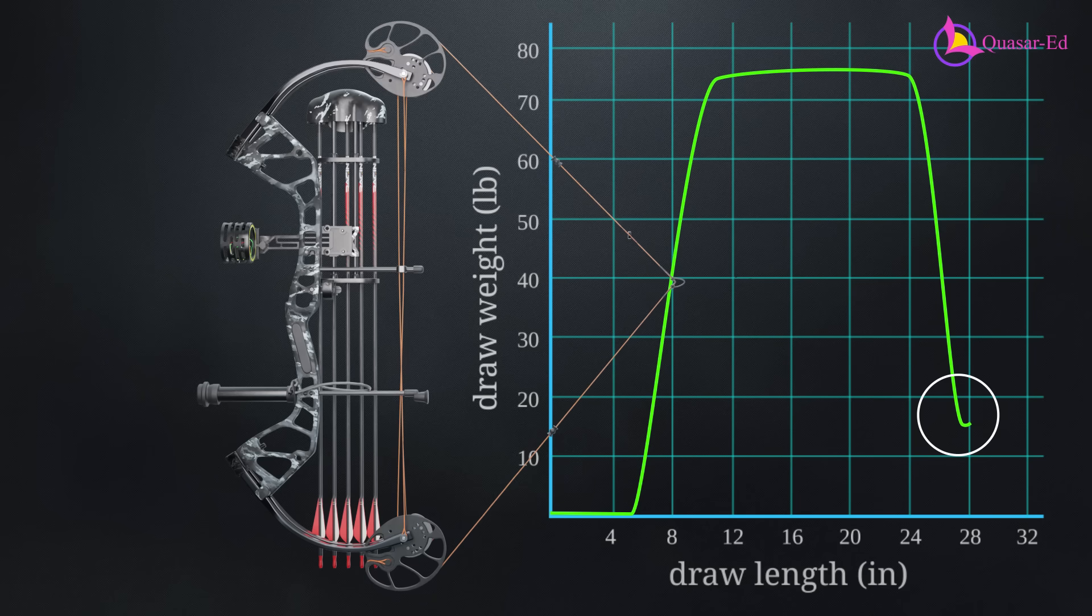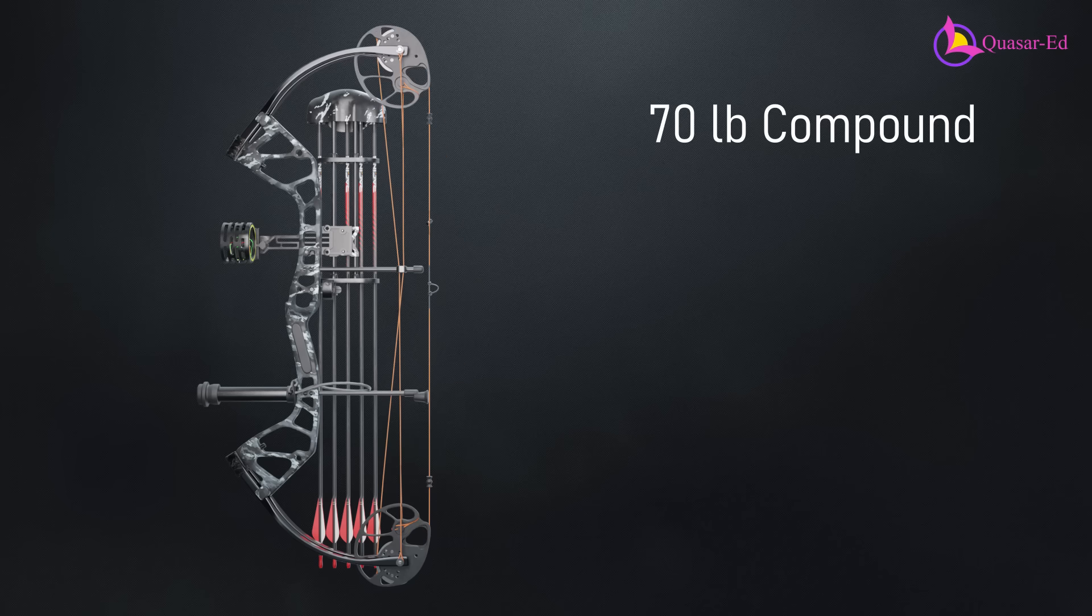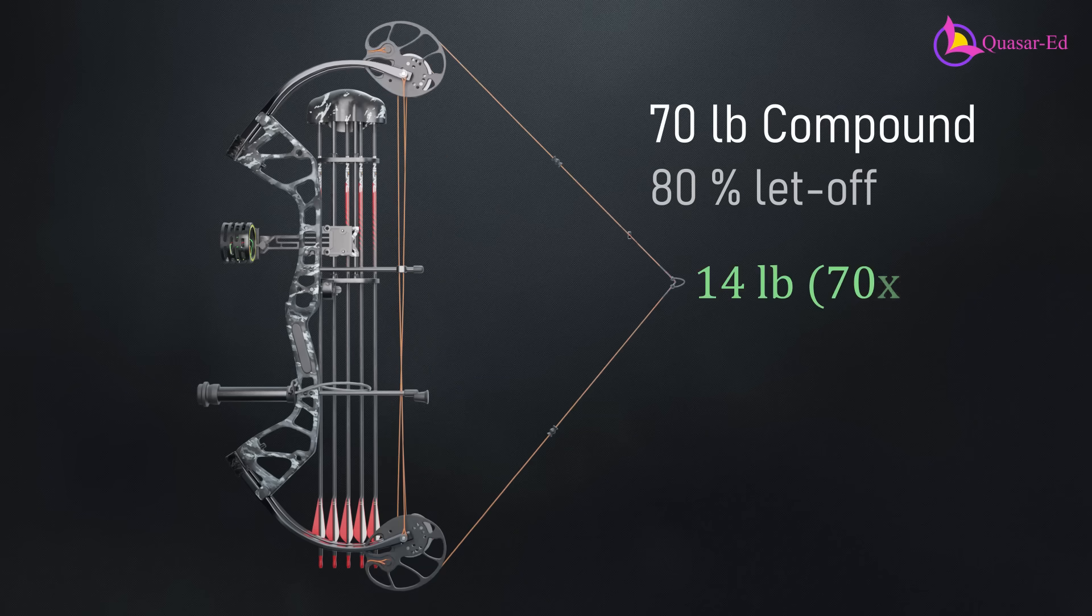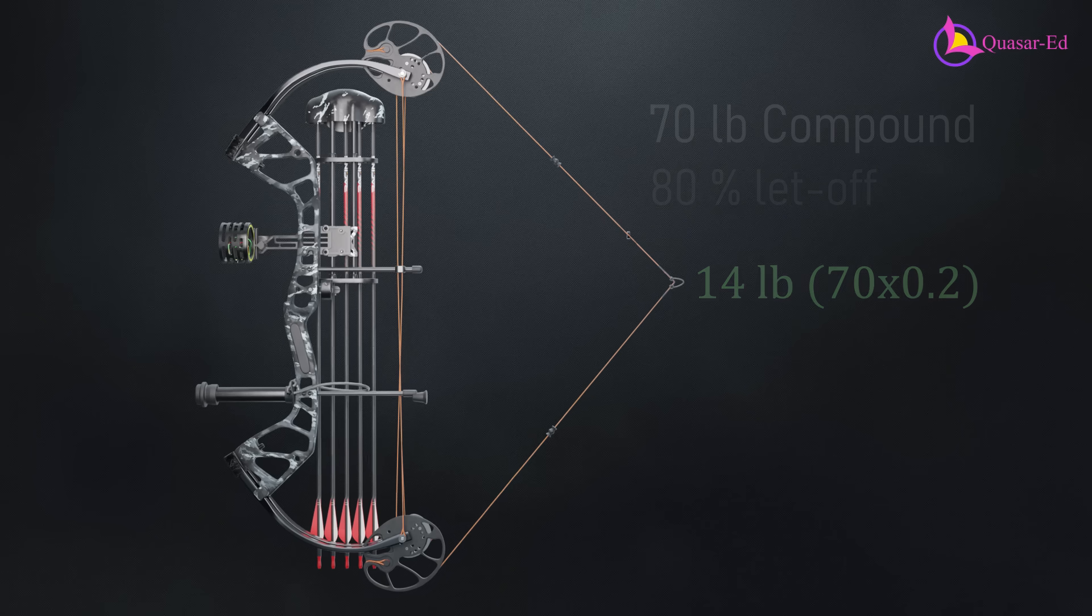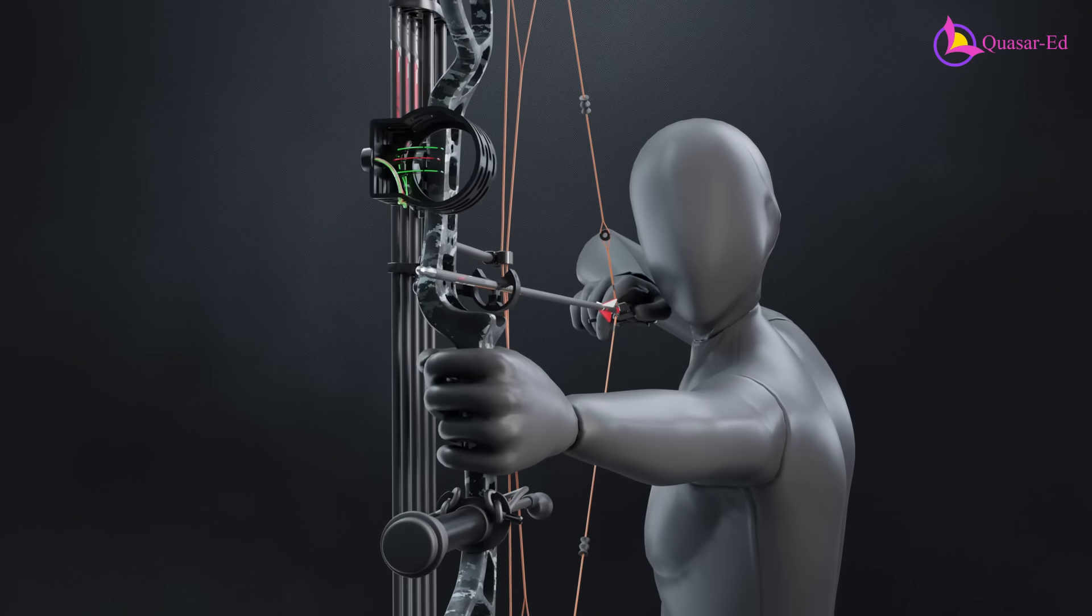This drop in force is called let-off. For example, a 70-pound compound bow with 80% let-off means that at full draw, the archer only holds 14 pounds of weight instead of 70. This is the compound bow's biggest advantage. The archer can hold and aim for longer with minimal effort, allowing for greater precision.